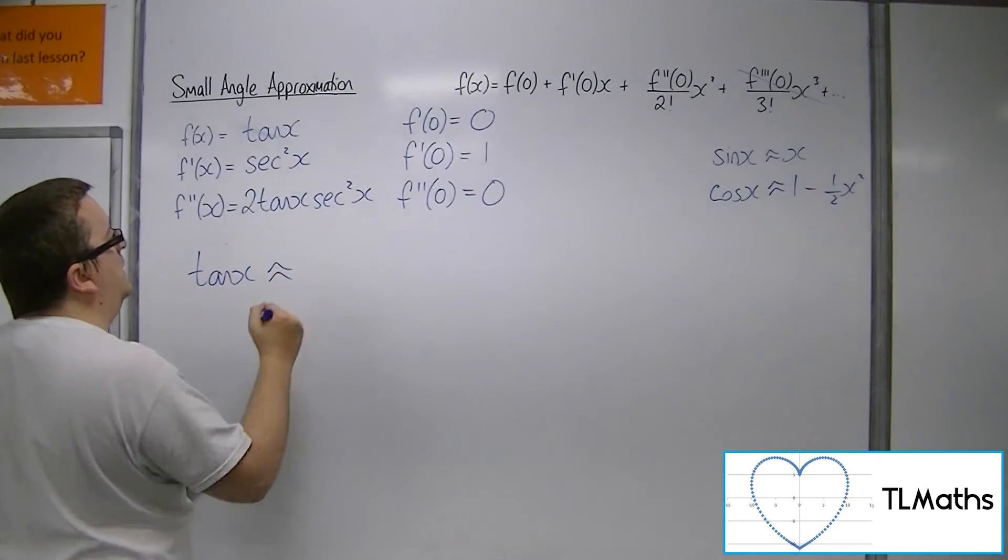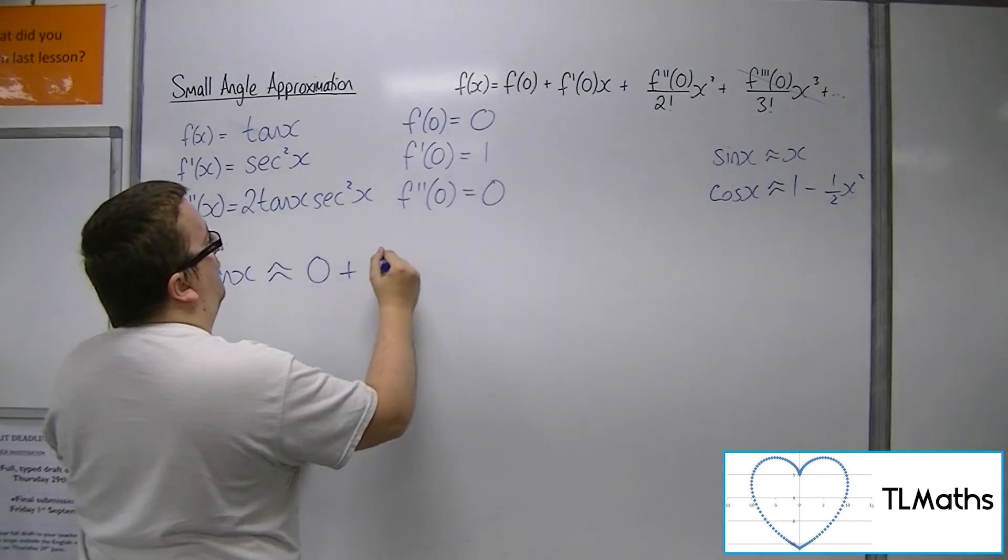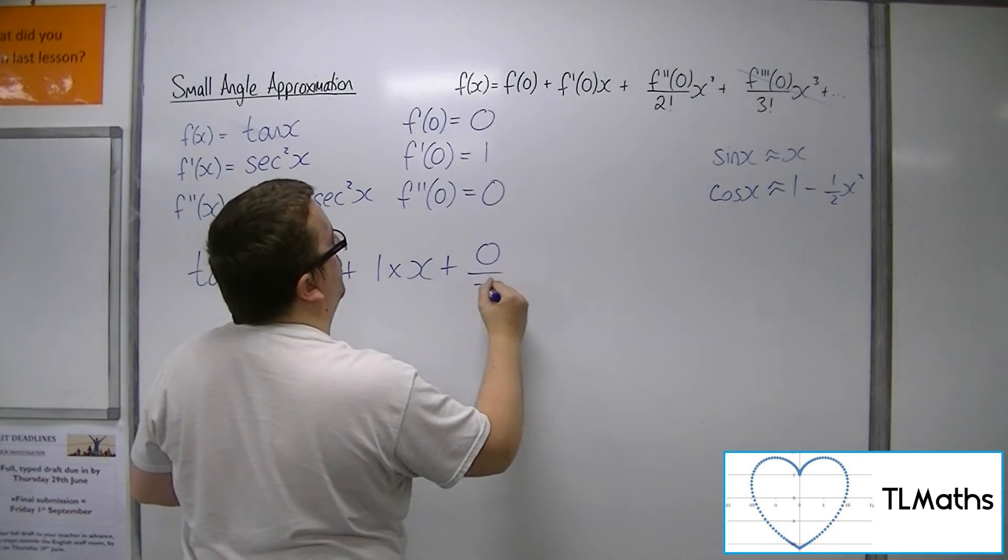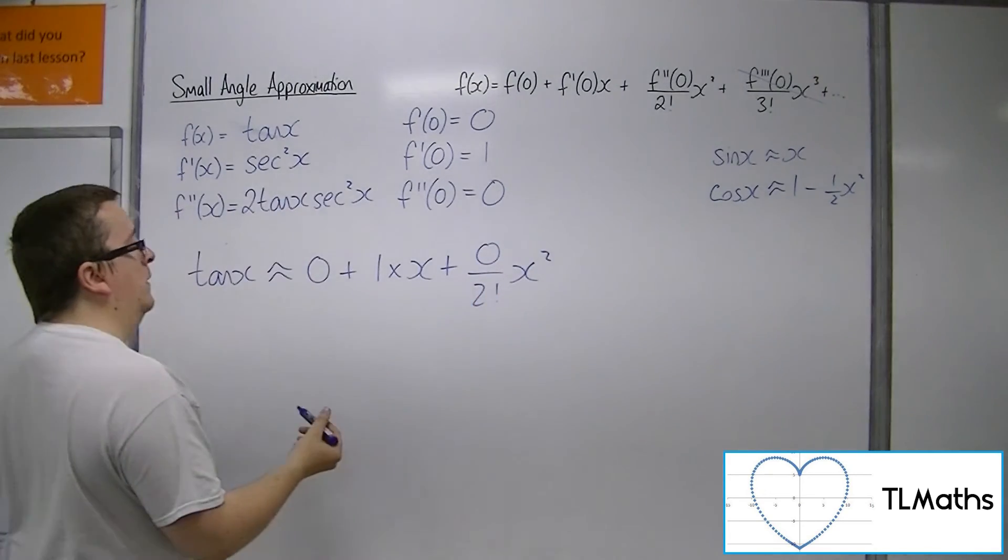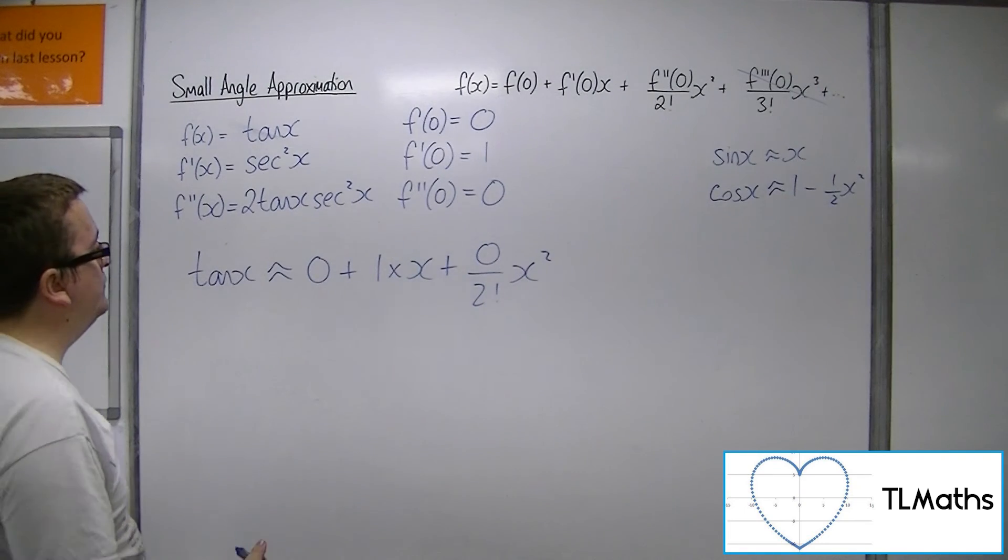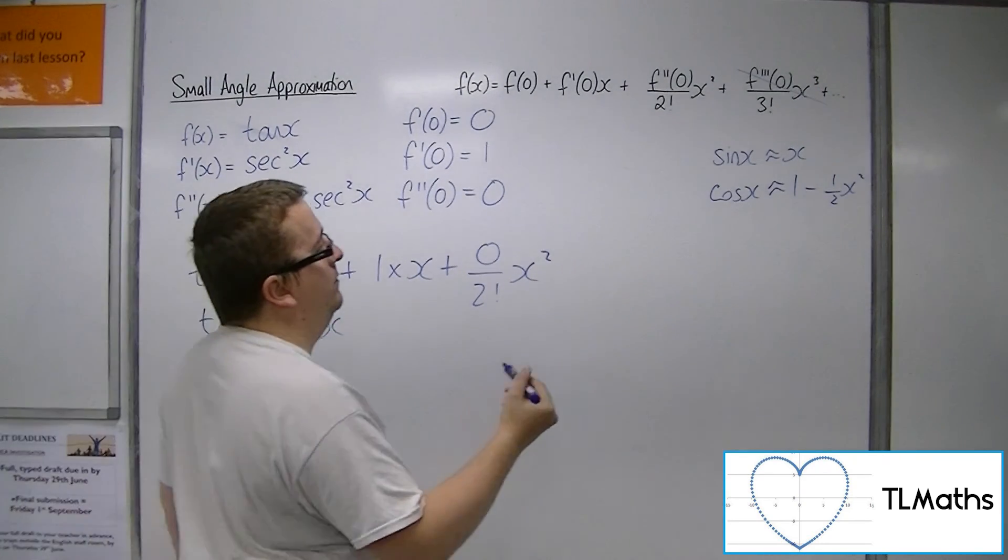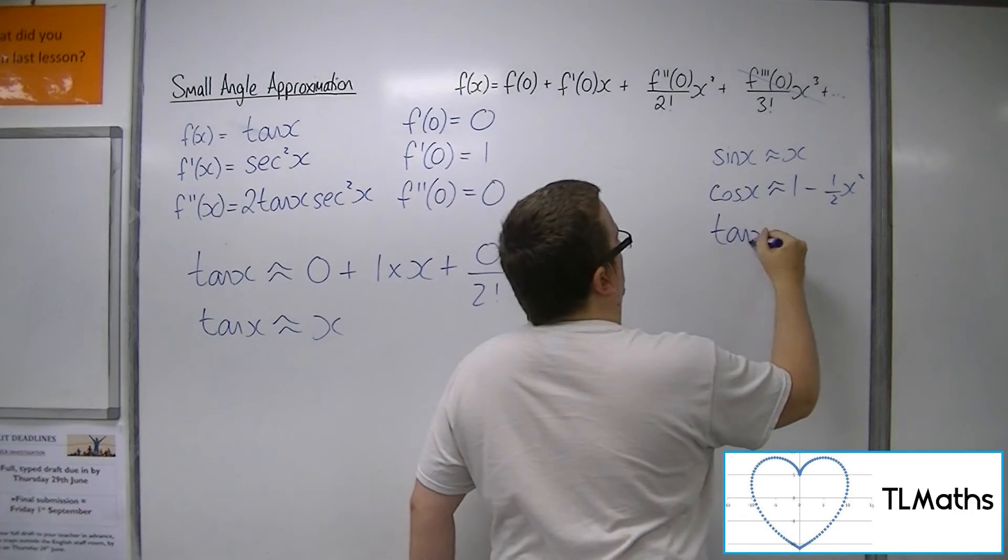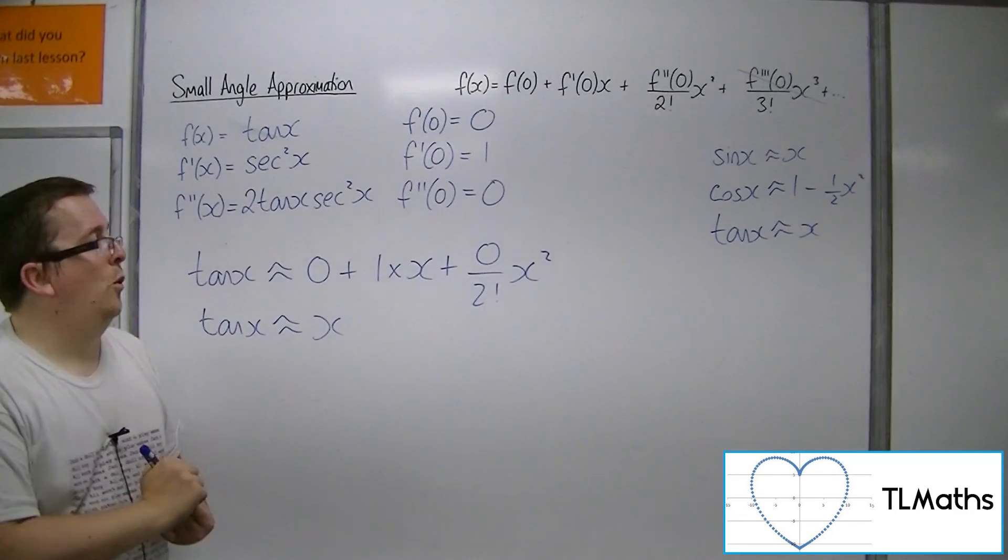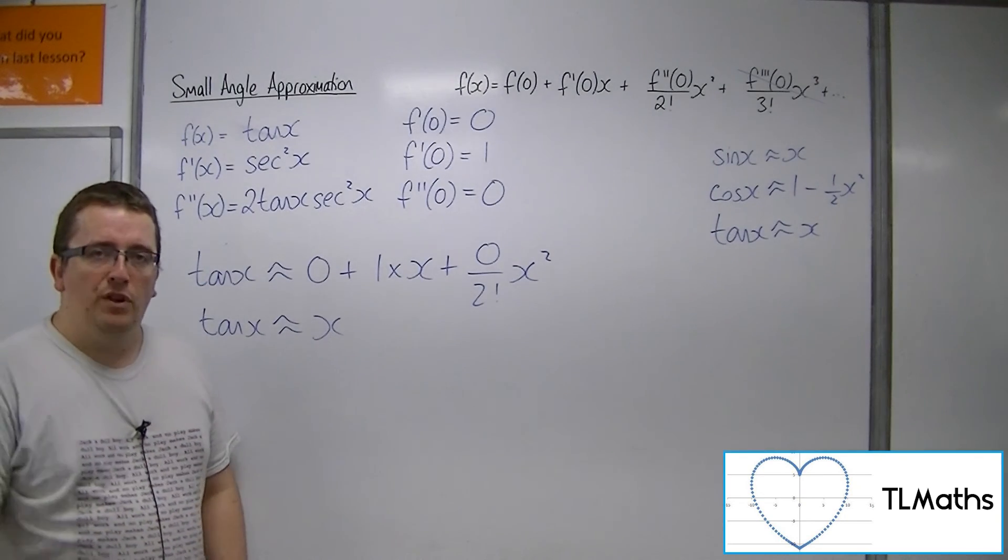So, we can say that tan x is approximately equal to f of 0 plus f prime of 0 plus f double prime of 0 over 2 factorial x squared. And so, tan x is approximately x. And so, we have our three small angle approximations, as we found geometrically in the previous video, but now found algebraically using Taylor series or McLaren series.